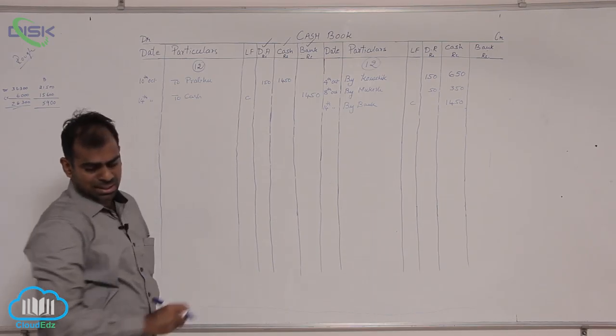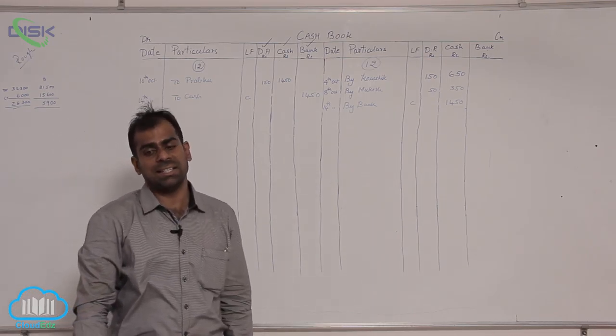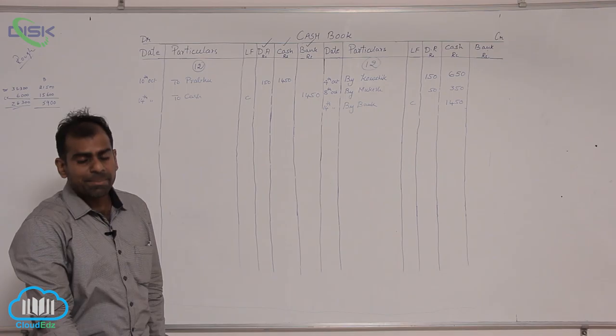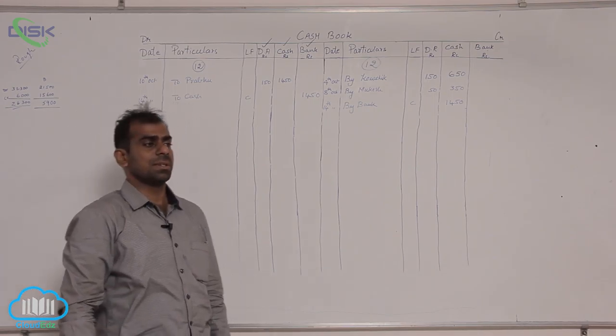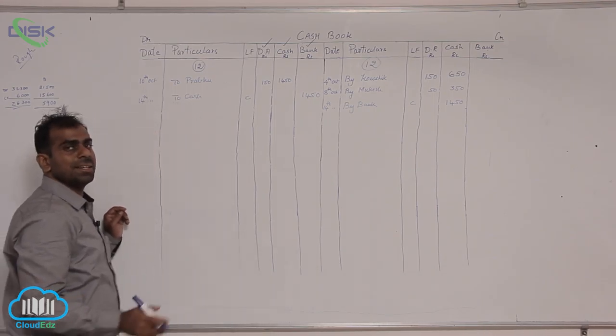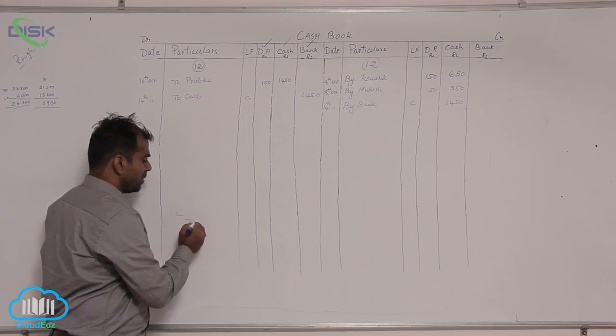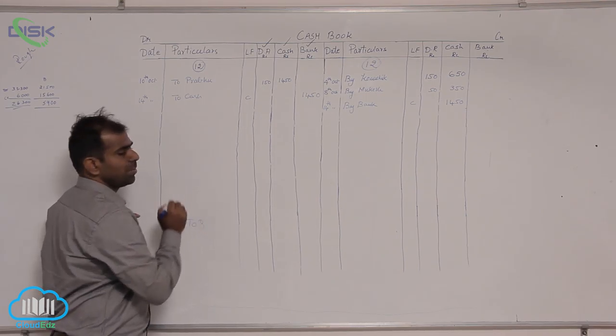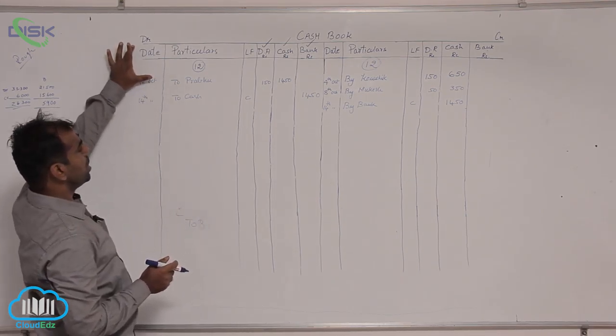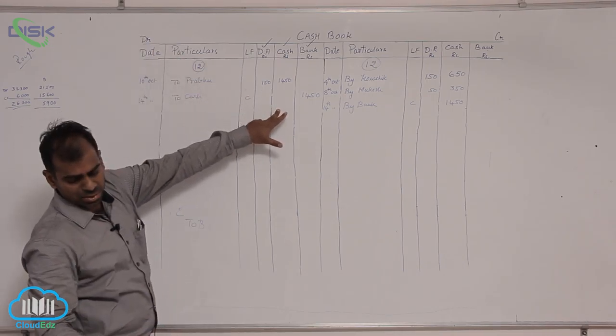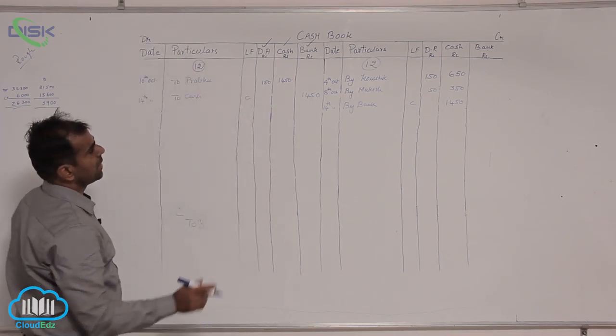Now, the next transaction I will be discussing is on 18, drew from bank for office use. So, again it is a contra entry, it is cash to bank if you remember, so cash should be debited, so enter the amount on the debit side in the cash column, the amount being 500.